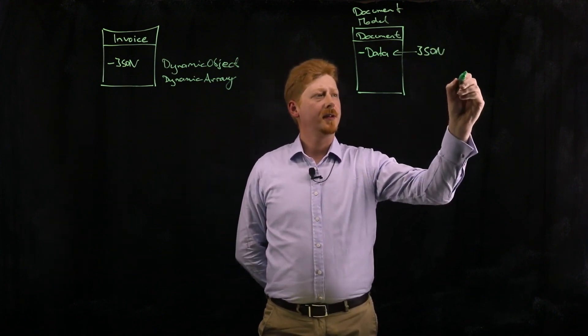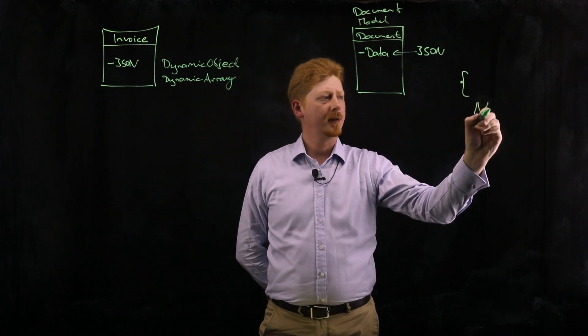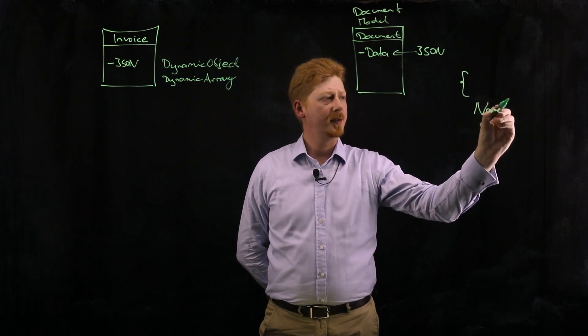Let's say my JSON stream is a fairly simple one, just an object with a name property.